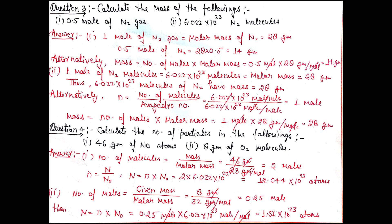Question number 4: Calculate the number of particles in the following. Part 1: 46 grams of sodium atoms. First we will calculate the number of moles in 46 grams of sodium atoms using the formula n = N/N₀. Then we will calculate the atoms using this formula, where N₀ represents Avogadro's constant.